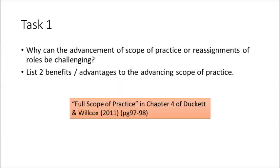For Task 1, read the full scope of practice section in Chapter 4 of Duckett and Wilcox — you'll find that on pages 97–98 — and think about these two questions: Why can the advancement of scope of practice or reassignment of roles be challenging? And secondly, list two benefits or advantages of advancing scope of practice.